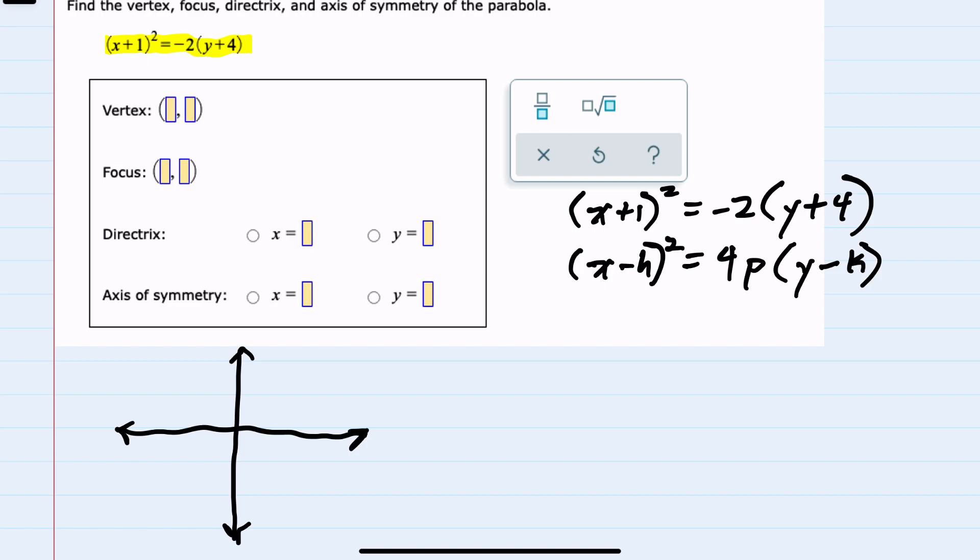Because from here, I can see that negative h equals 1 in this equation, so h will be negative 1. I can see that negative k equals 4, so k will be negative 4. And I can see that 4p equals negative 2. Solving for p gives me p equals negative 1 half.